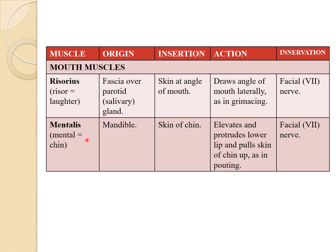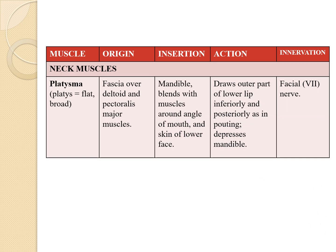The next muscle is the mentalis. 'Mental' means chin. The site of origin of the mentalis is the mandible, and the insertion is in the skin of the chin. Its action is to elevate and protrude the lower lip and pull the skin of the chin up, as in pouting. It is also innervated by the facial nerve.